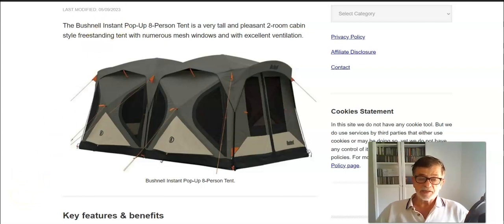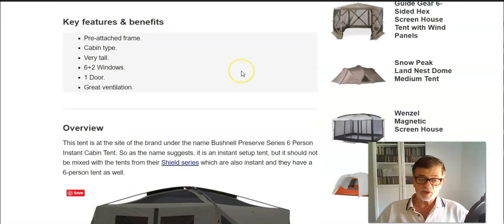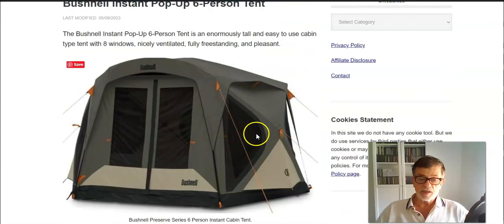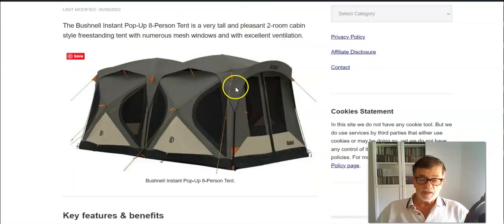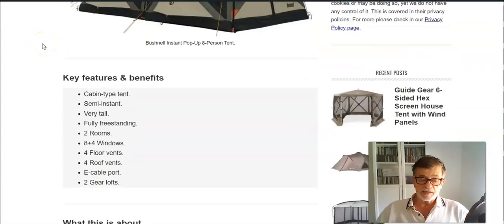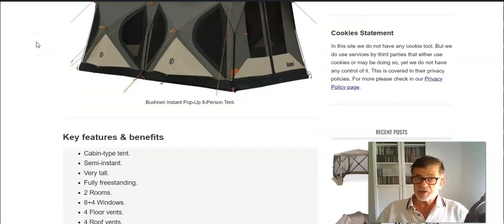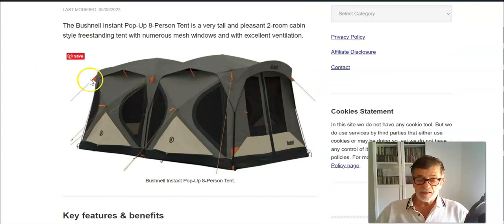There is yet another six person version just to mention it, in case this eight person is too big for you. This eight person tent I would describe as fully freestanding, and this means that even with the fly on you can still rotate it and move short distances in the camp.